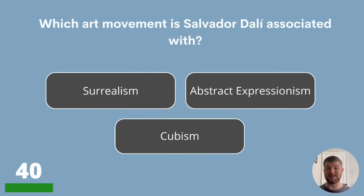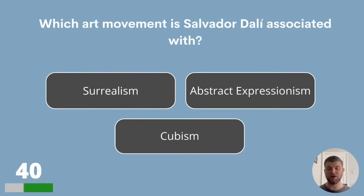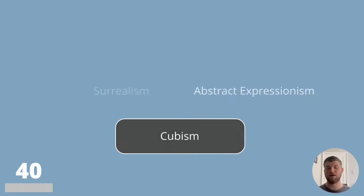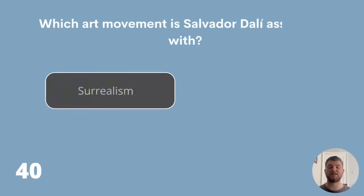Question 40. Which art movement is Salvador Dali associated with? Surrealism, Abstract Expressionism or Cubism? The answer is Surrealism.